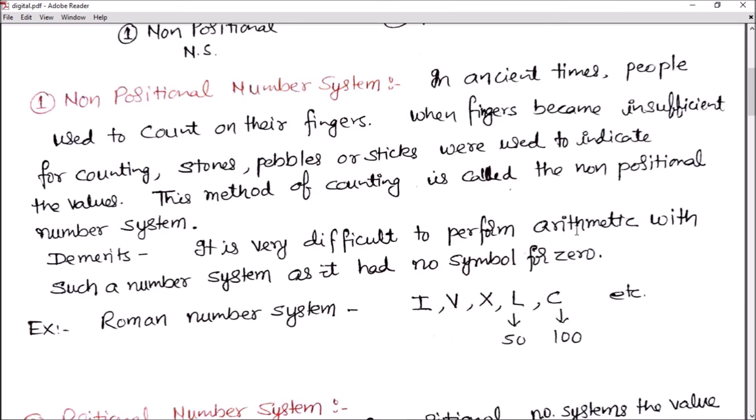It is very difficult to perform arithmetic with such number systems. Addition, subtraction, multiplication, and division are very difficult in this system. Since it has no symbols for zero, this number system is not used nowadays. One of the main examples of non-positional number system is the Roman number system, where we use I, V, X, L, C.